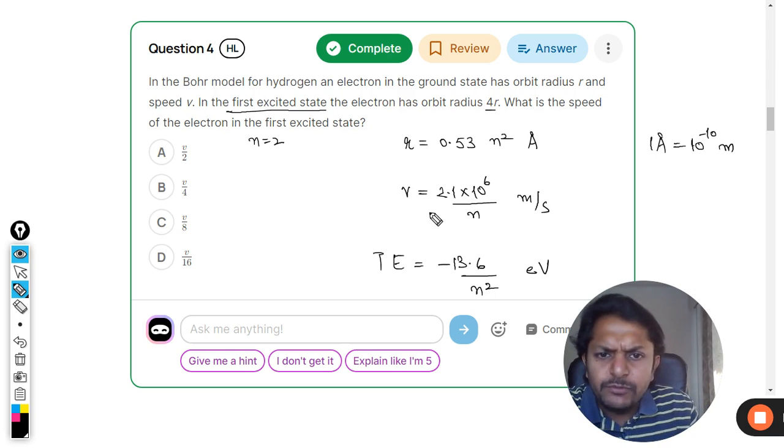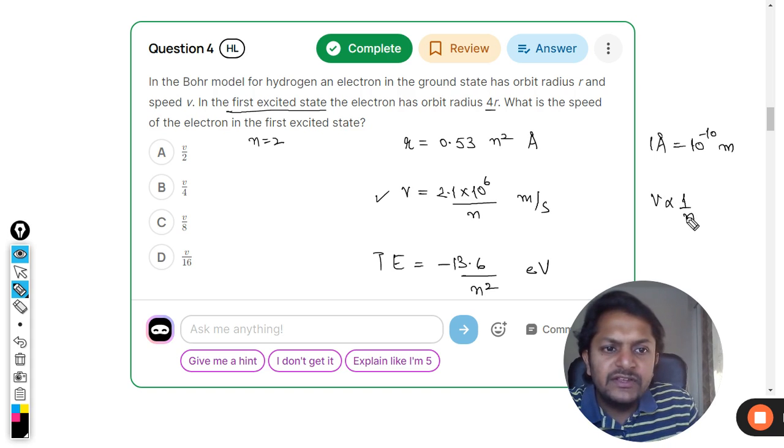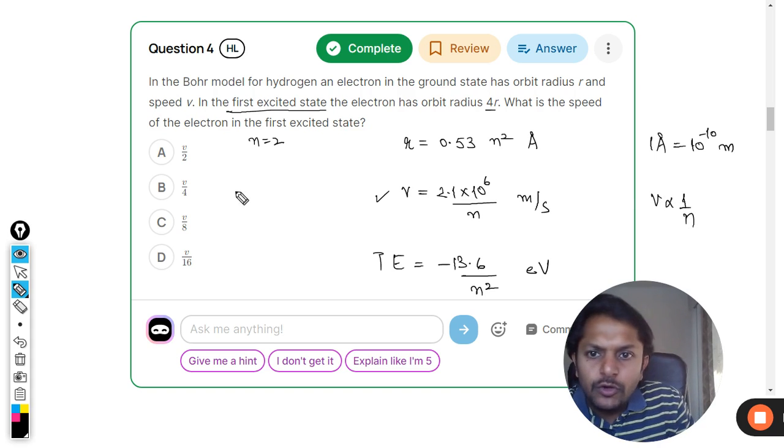Clearly from this we can say that the velocity is inversely proportional to n. Now if it is inversely proportional to n, we can say that v2 divided by v1 will be equal to 1 divided by 2. So v2 is going to be v by 2.